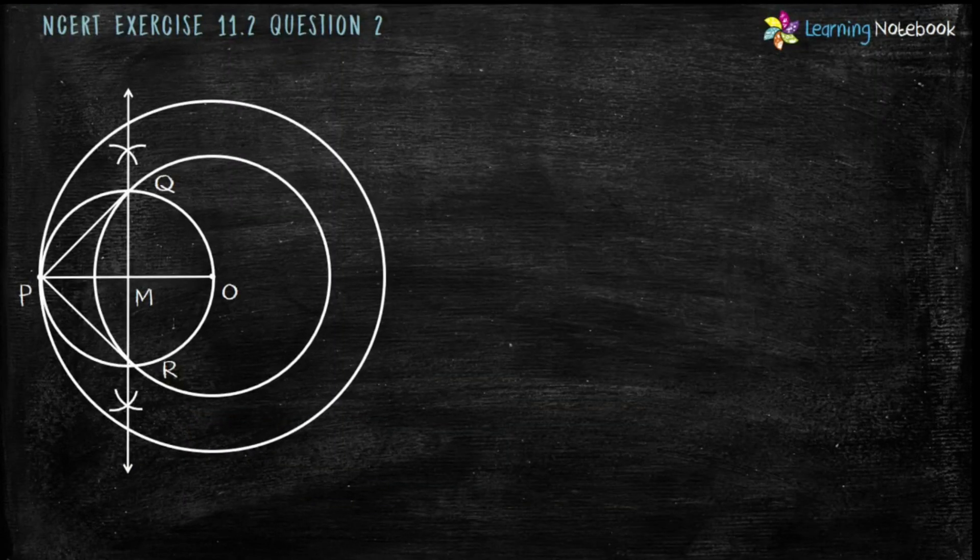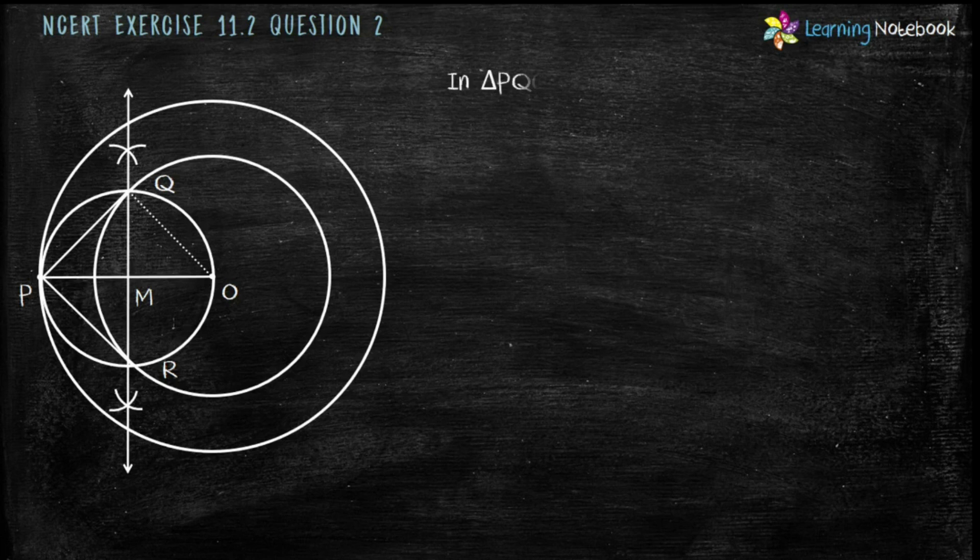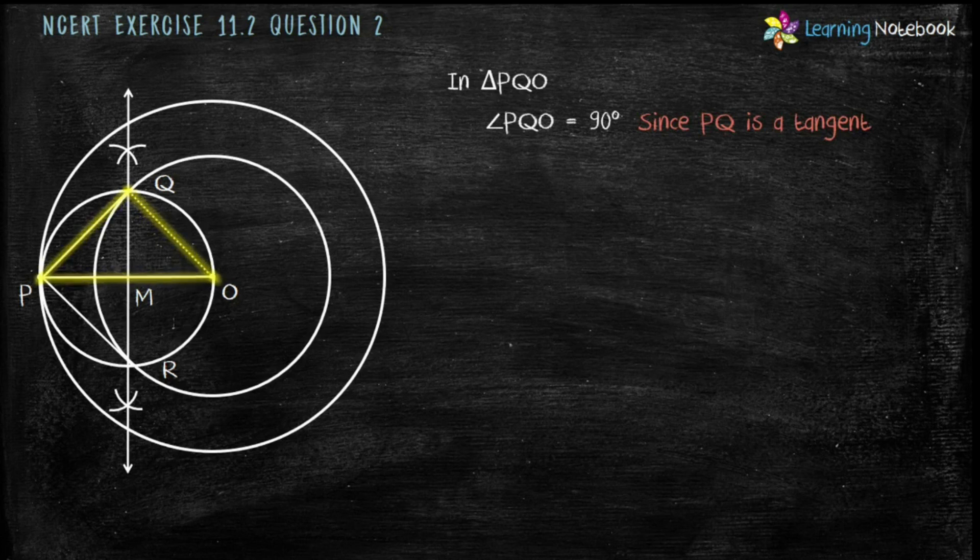Now, let's find the length of the tangent by actual calculation. For this, join OQ. Now, in triangle PQO, angle PQO equals to 90 degrees since PQ is a tangent.